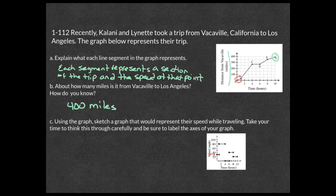From hour zero to hour one it's right in the middle of 20 and 40, so about 30 mph. From B to C, that's about 250 miles, so they're going about 80 miles per hour — shown from hours one to four. From hour four to six they don't go anywhere, as if they stopped for lunch, so speed is zero on the x-axis.